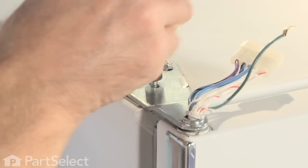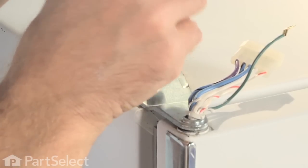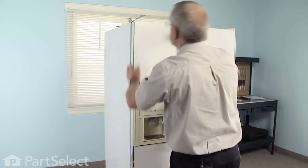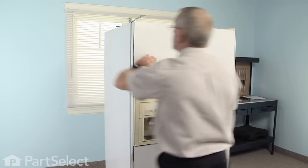Now we won't tighten the screws yet until we line the door up. Make sure that it's square with the cabinet on the side across the top and we have an even gap between the two doors.